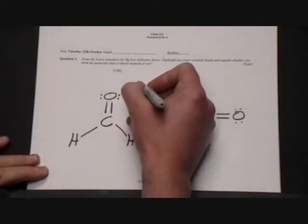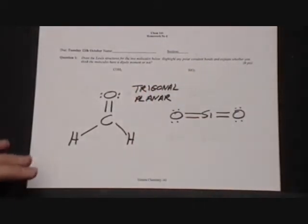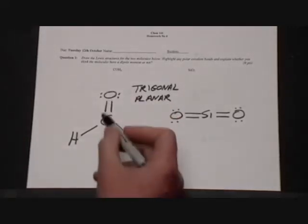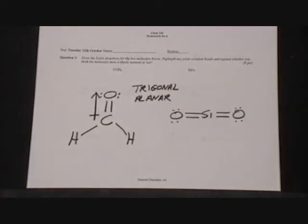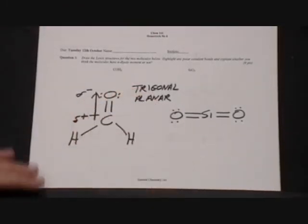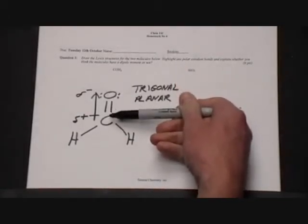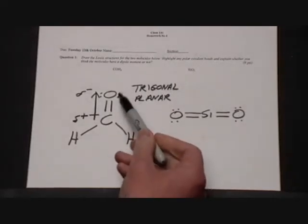Looking at these final Lewis structures, we can see that the first molecule, COH₂, is trigonal planar with a bond angle of 120 degrees. Comparing electronegativities, the only polar covalent bond is the oxygen-to-carbon bond. The dipole points towards the more electronegative atom, which is the oxygen. This end of the bond is electron-enriched with a negative dipole, while the carbon end is electron-deficient and carries a positive dipole. Most of the electron density in this bond is moving towards the oxygen, which already has lone pairs of electrons.